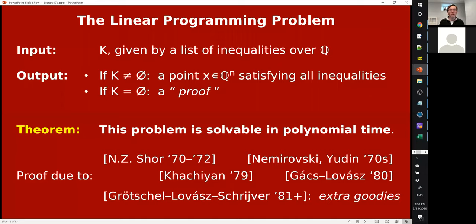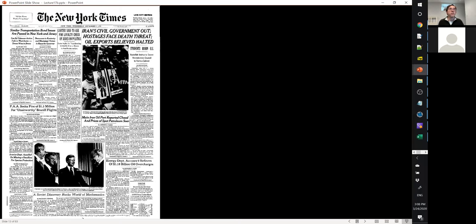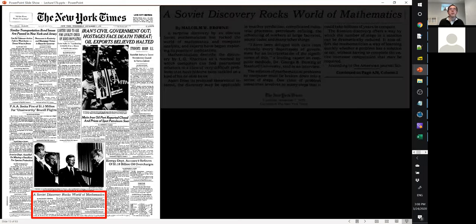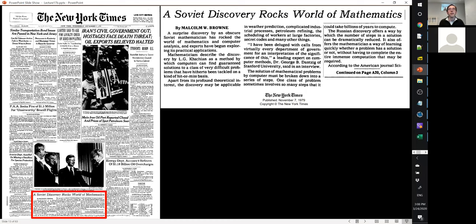It's funny to think about, but 40 years ago it was really big news back then. This is the front page of the New York Times in November/December 1979. You can say down here it was front page news: 'A Soviet Discovery Rocks the World of Mathematics'—it was about Khachiyan's paper.